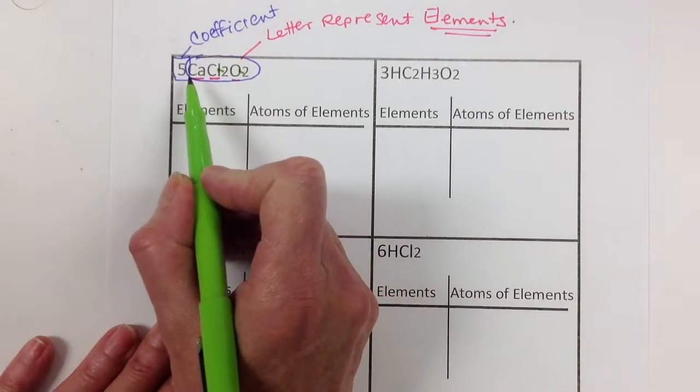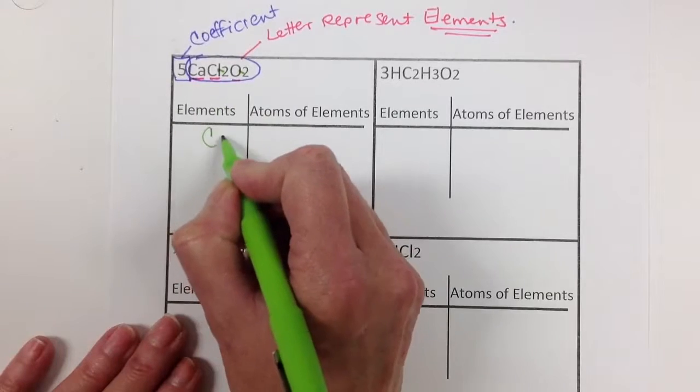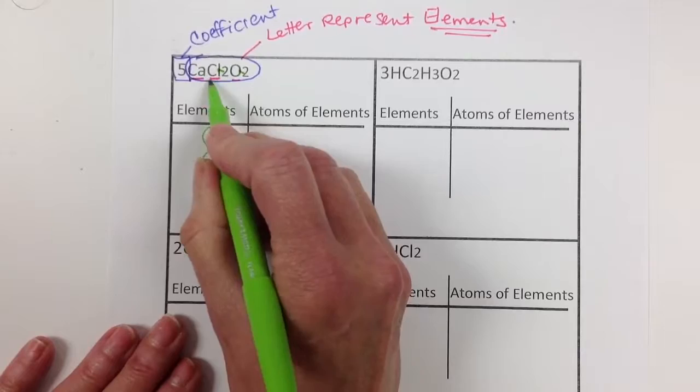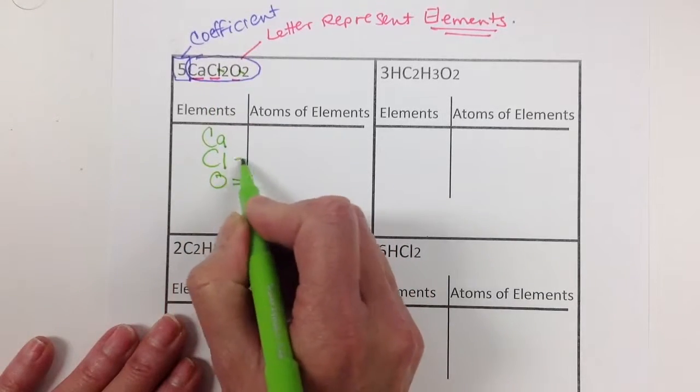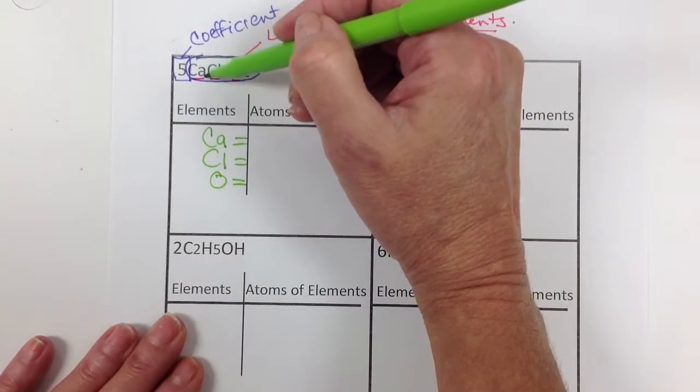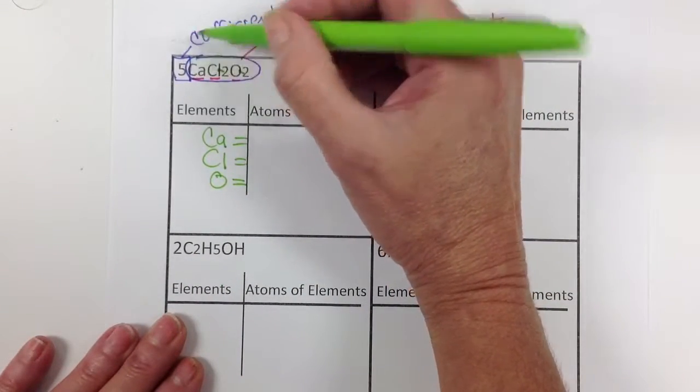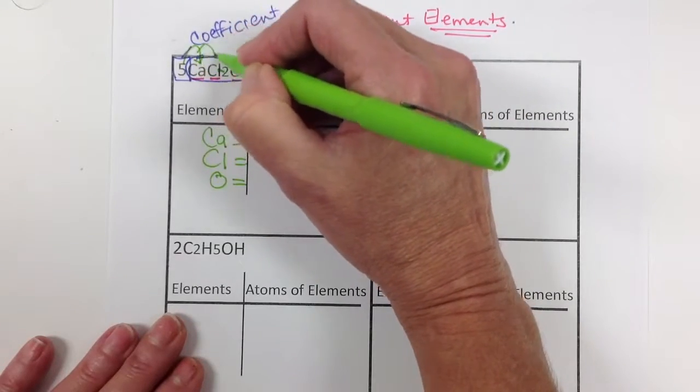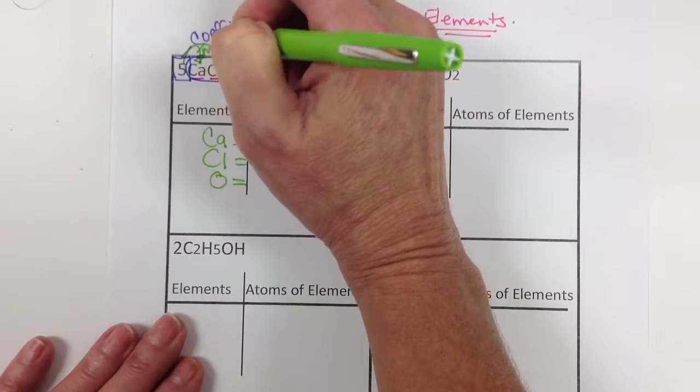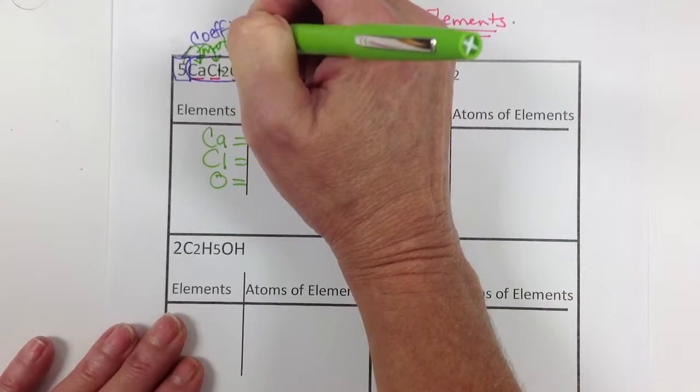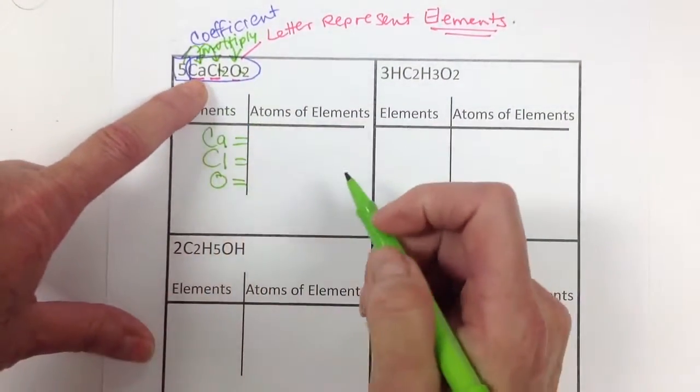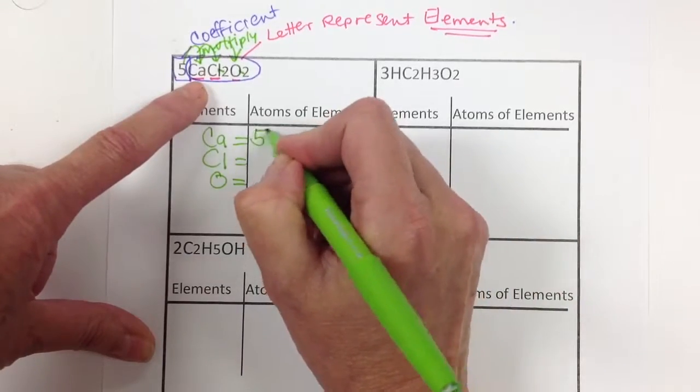Alright, so let's see what elements are present. We have Ca, we have Cl, remember that Cl represents still one element, and we have O for oxygen. So if we look at this, we only have one Ca here, but the coefficient tells us we have five times whatever's in there. So we're really going to have to multiply the coefficient by everything within the compound. So if we only had one calcium, now we have five times that one, so that means we have five.